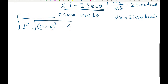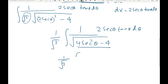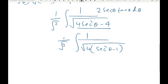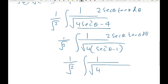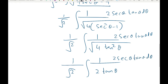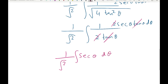Taking 1 over √2 outside the integral: 1/√2 times the integral of √(4 secant²θ minus 4) times 2 secant θ tangent θ dθ. Factor 4 out of the square root to get √(4 times (secant²θ minus 1)). Using the Pythagorean identity, secant²θ minus 1 equals tangent²θ. So √(4 tangent²θ) equals 2 tangent θ. The 2 and tangent θ cancel, leaving 1/√2 integral of secant θ dθ.